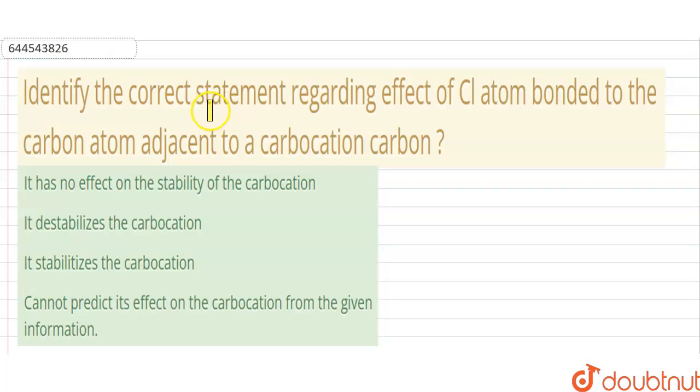The question says: identify the correct statement regarding the effect of Cl atom bonded to the carbon atom adjacent to a carbocation carbon. So we have a carbocation and a Cl atom bonded to the carbon adjacent to the carbocation carbon.